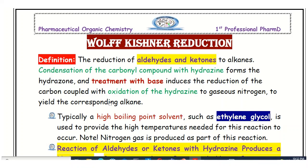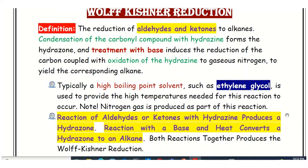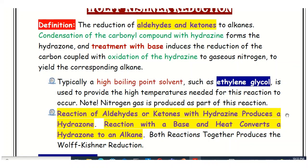For the Wolff-Kishner reduction, the solvent required is usually a high-boiling solvent — that is ethylene glycol — which provides the high temperature that is one of the most important requirements for this reaction. Nitrogen is also produced as a byproduct of this reaction.